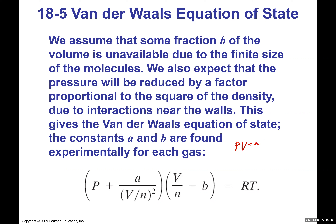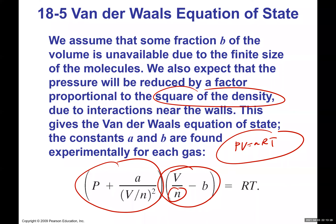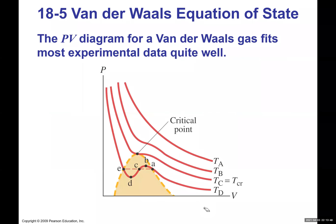The Van der Waals equation also accounts for reduced pressure near the walls, which is proportional to the square of the density. The constants a and b are experimentally determined. The modified equation is: (P + an²/V²)(V − nb) = nRT, providing a more realistic description of real gas behavior than ideal PV = nRT.